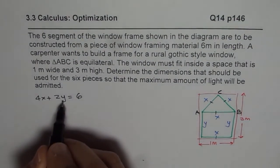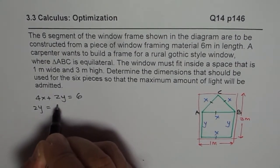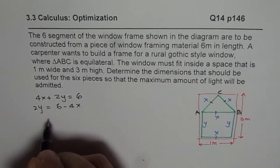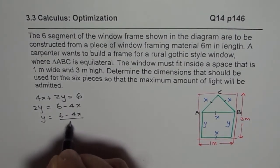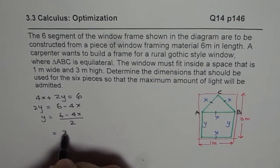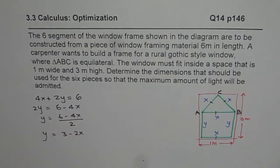So total perimeter is 6 meters. So I can write this as 4x plus 2y equals to 6. So that is one statement. From here we can solve for y. So 2y equals to 6 minus 4x, or y equals to 3 minus 2x.